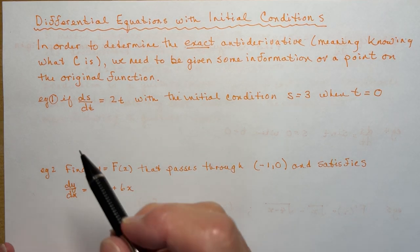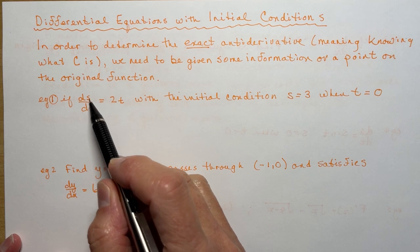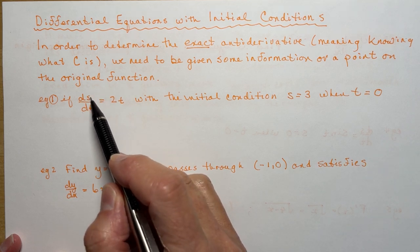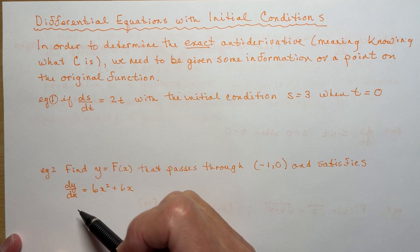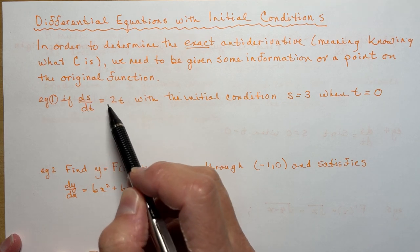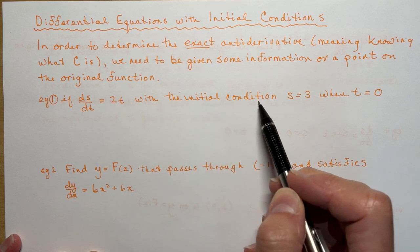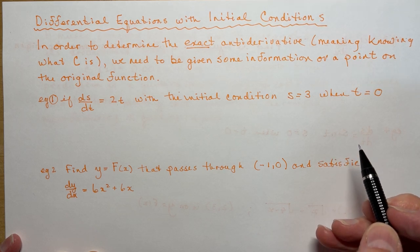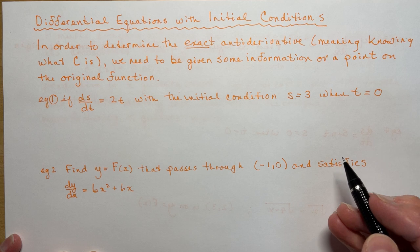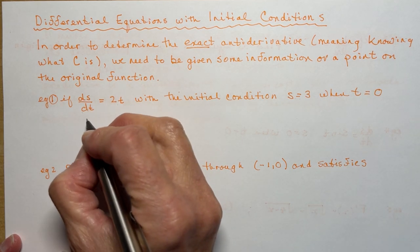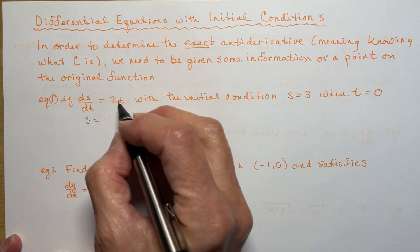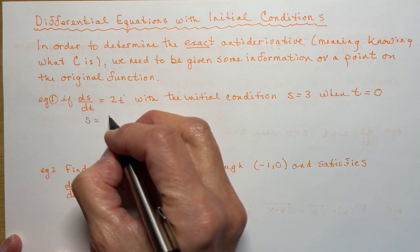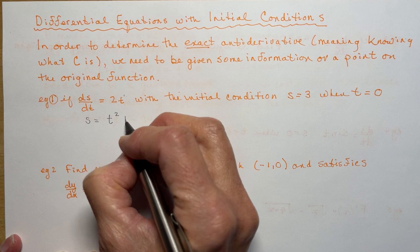We'll start with an easy one. We have ds/dt — that's the same as dy/dx — so this is a position function with respect to time. If ds/dt is equal to 2t, with the initial condition that s equals 3 when t equals 0, we're trying to find the original position function s. So if we take the antiderivative of ds/dt, we have s. Remember that you add 1 to the exponent: there's a 1 here, add 1 to get 2, divide by 2 — it gets rid of the 2 — and I have t squared plus c.